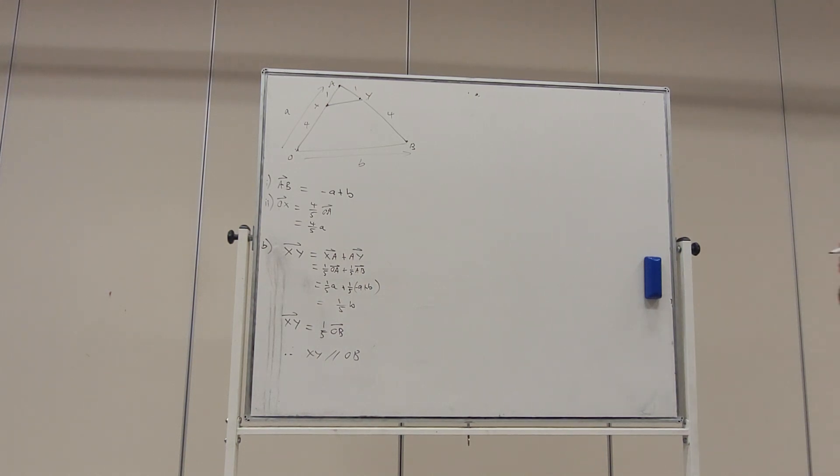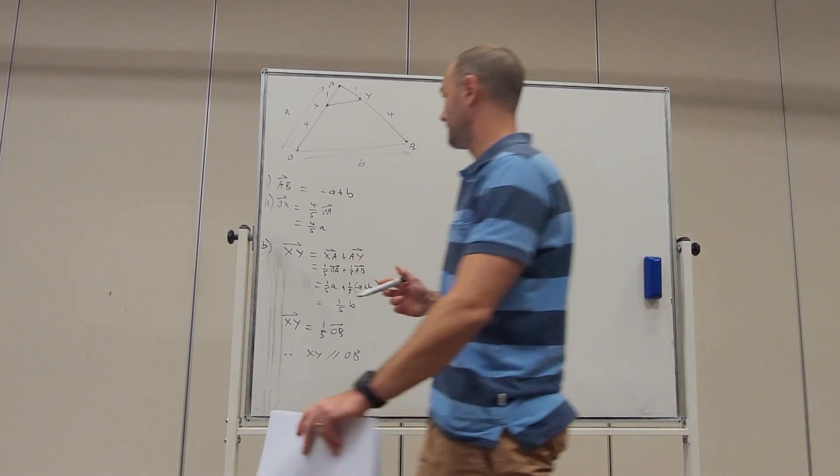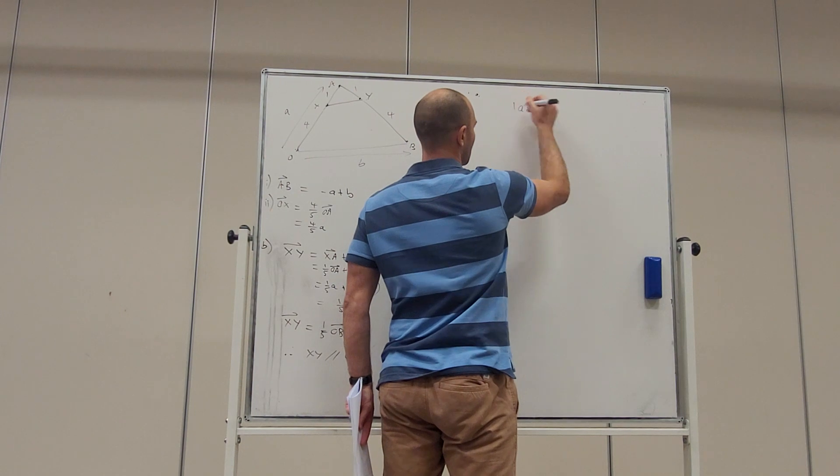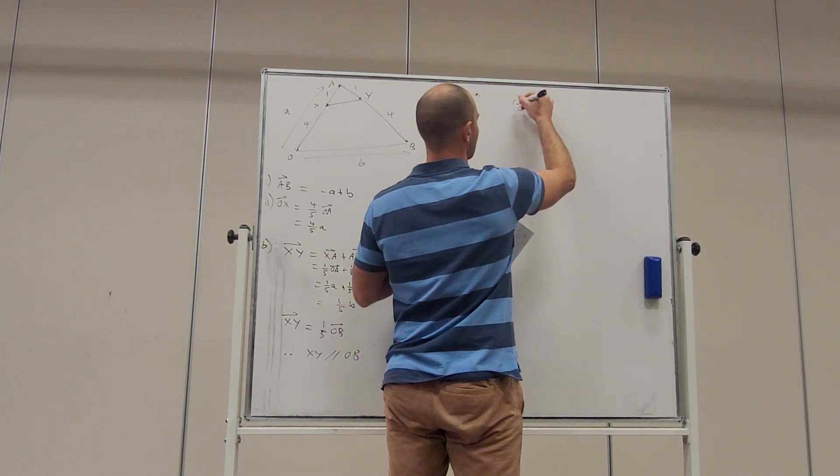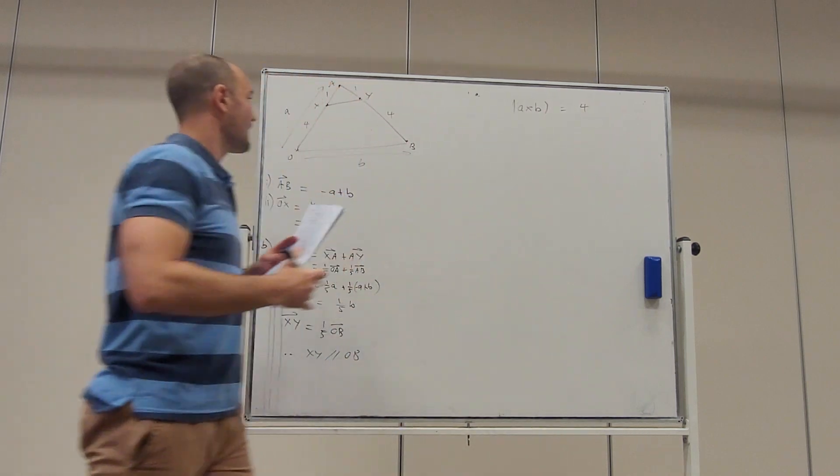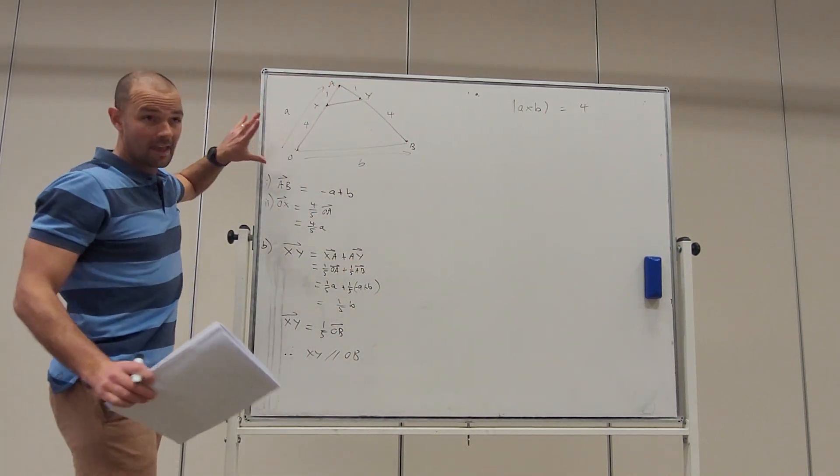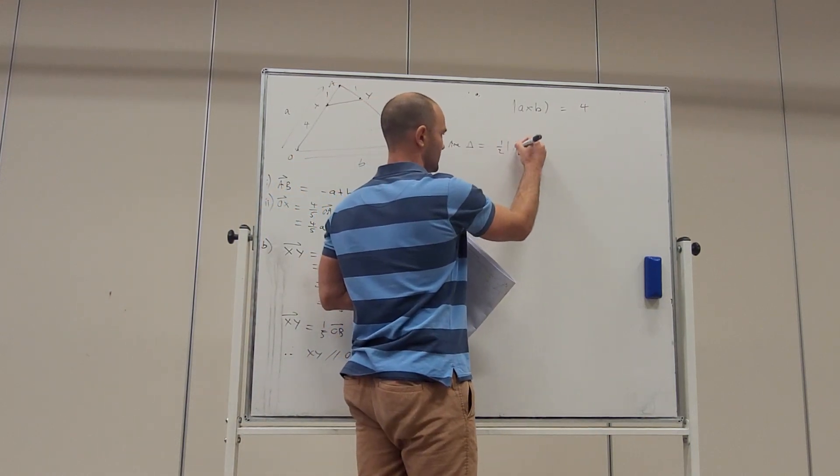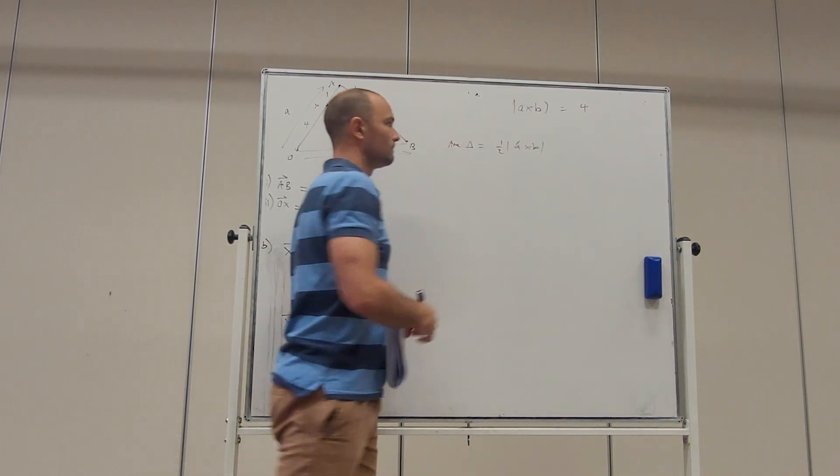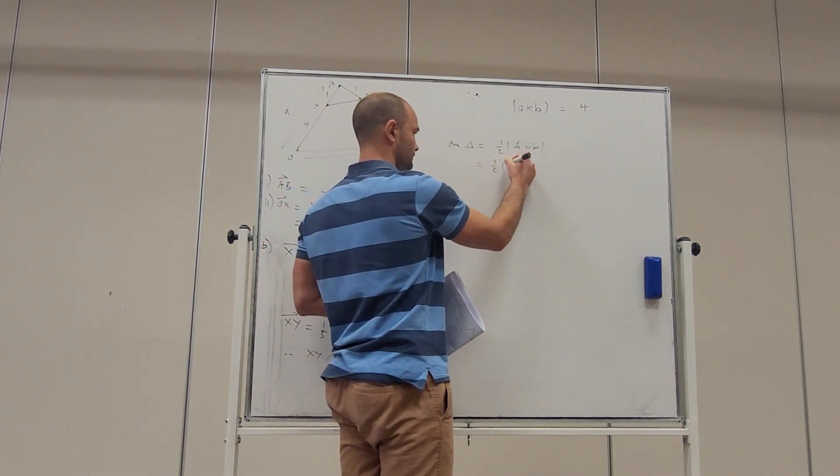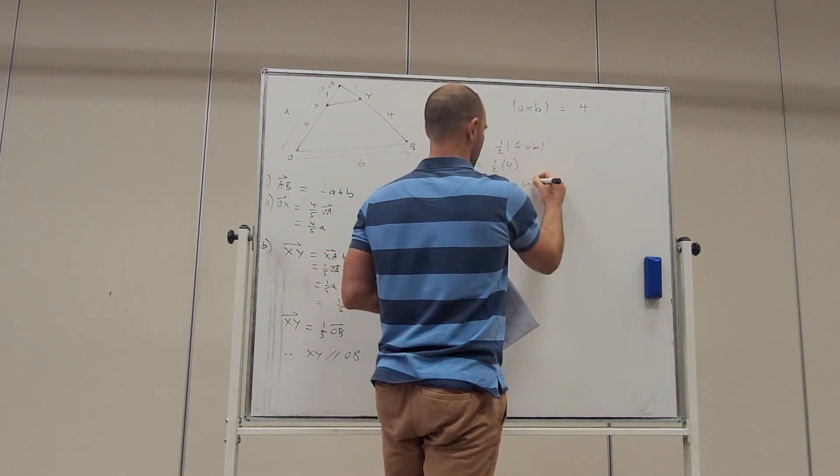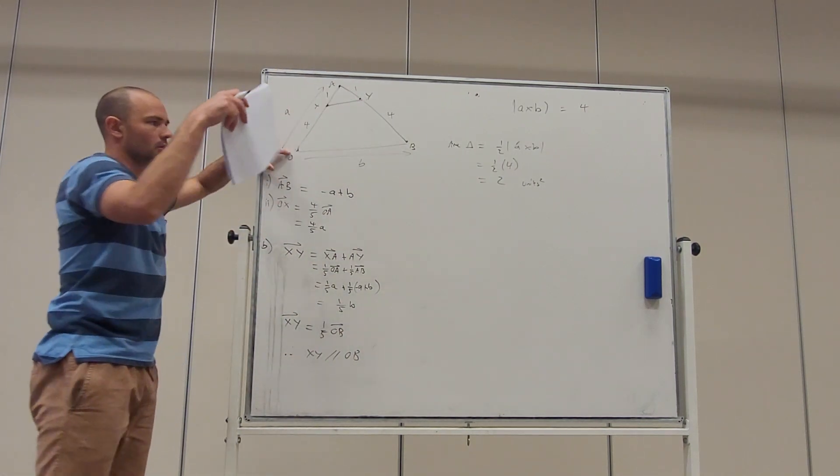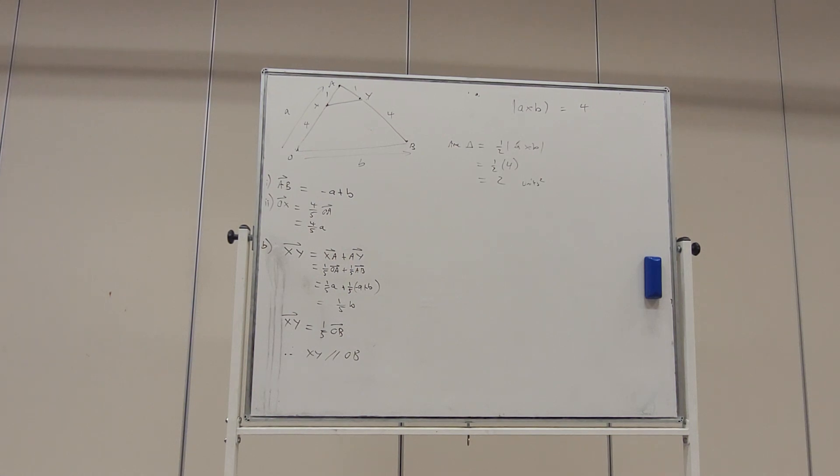Okay. Vector A cross vector B is equal to four. So, the modulus of A cross B is equal to four. Find the area of triangle OAB. Well, the area of this triangle is, area of the triangle is half the modulus of A cross B. All right. So, it's going to be half of four which is two units squared. Okay. So, the area of triangle OAB is two units squared.